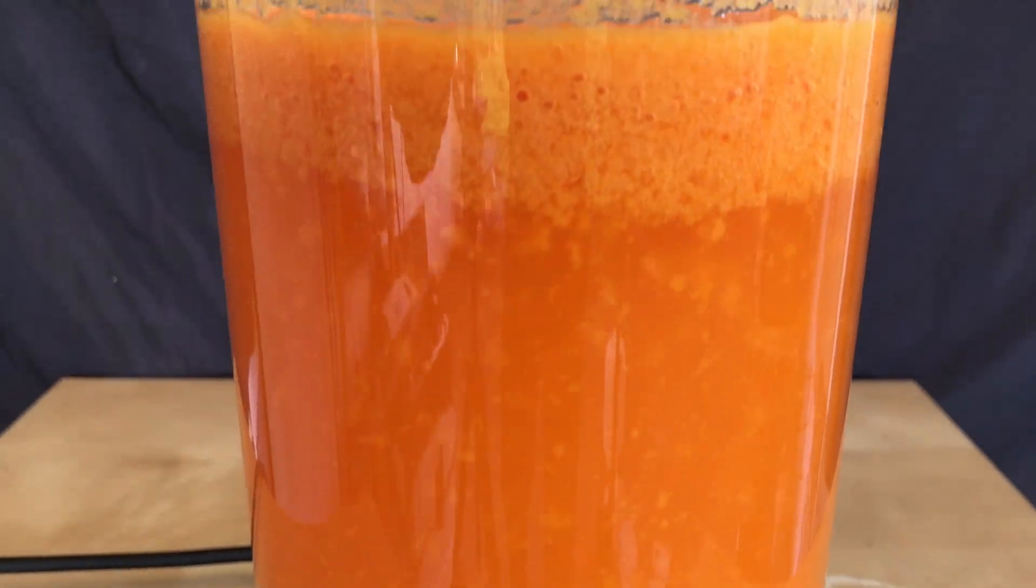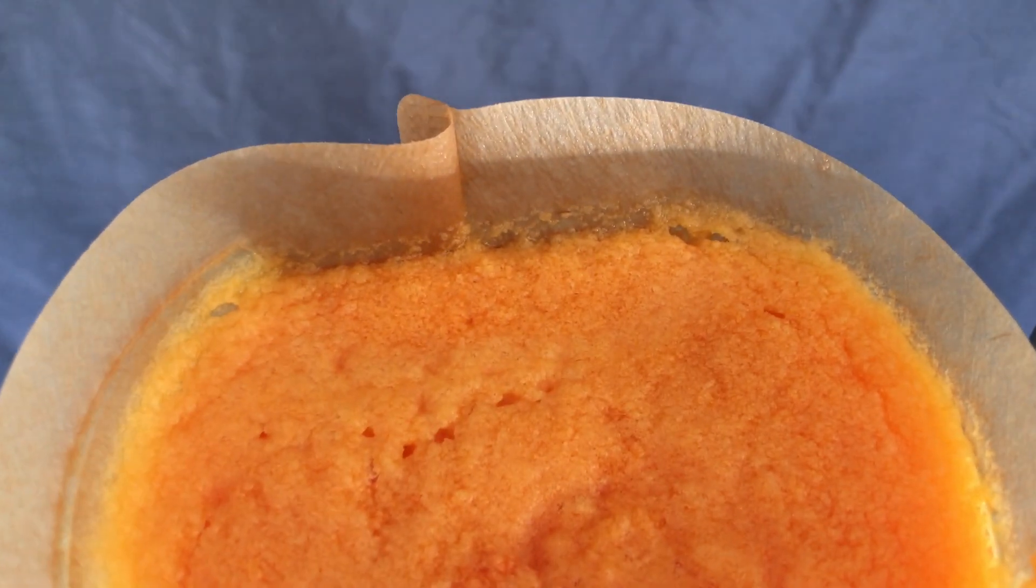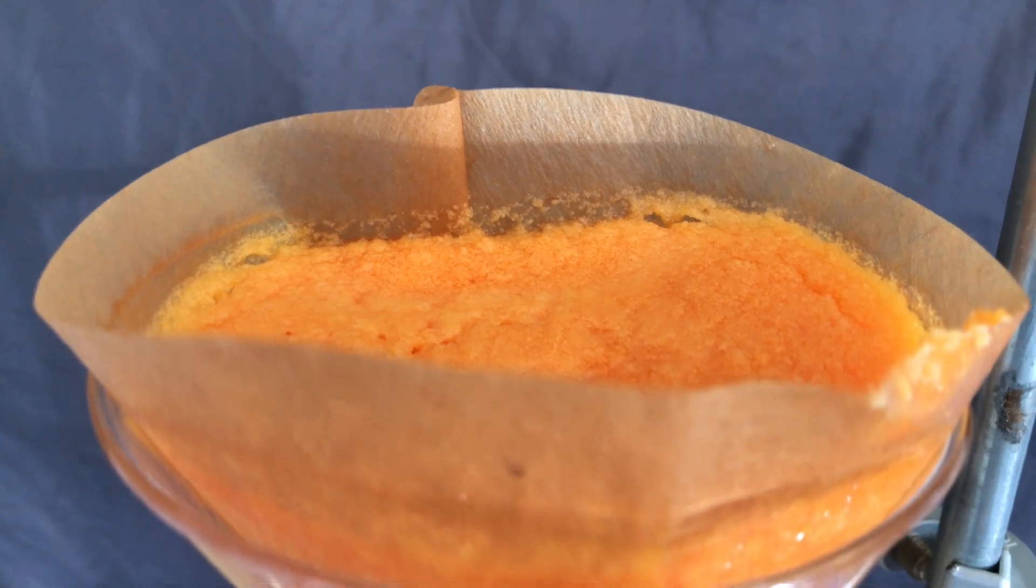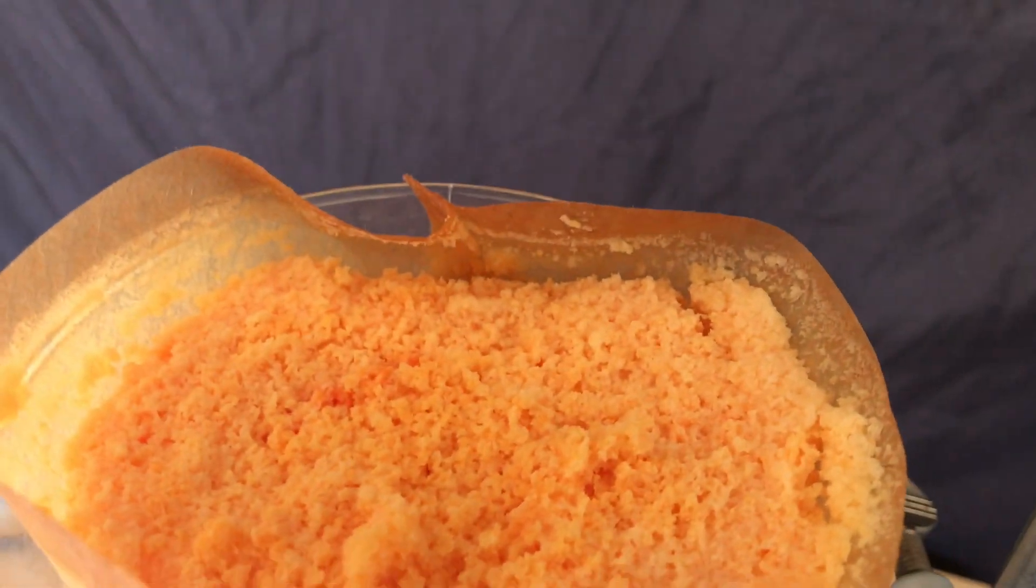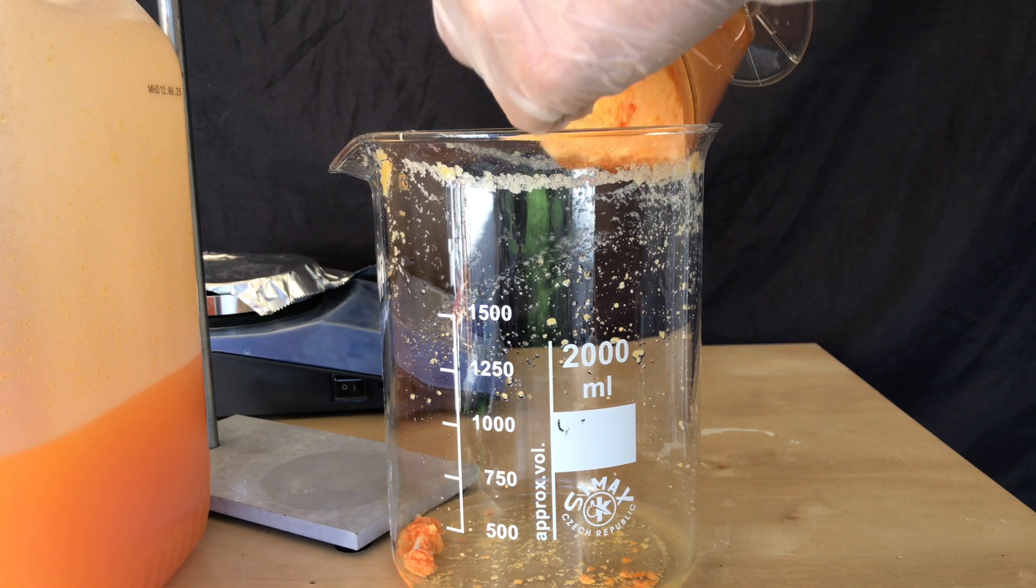Once the acid was added it immediately crashed out and formed these flakes. Everything also turned slightly orange because leftover bromate released bromine. After the gravity filtration I also washed the product using 100 milliliters of distilled water.